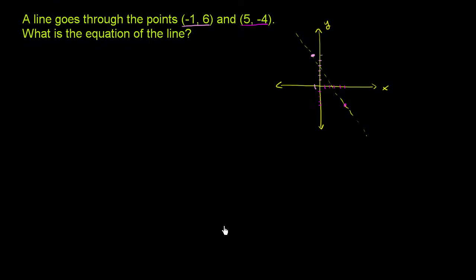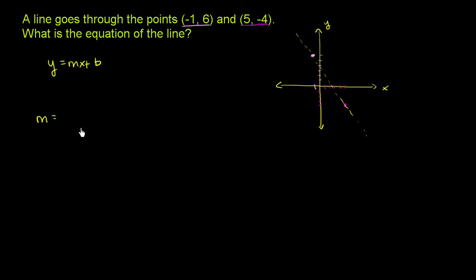So let's find its equation. A good place to start is we could find its slope. We can write the equation y equals mx plus b — this is slope-intercept form, where m is the slope and b is the y-intercept. We can first try to solve for m. So the slope is the change in y over the change in x, or we could view it as the y value of our endpoint minus the y value of our starting point over the x values of our endpoint minus the x values of our starting point.